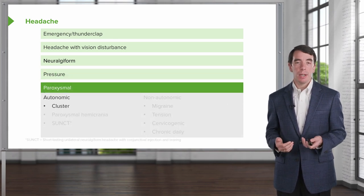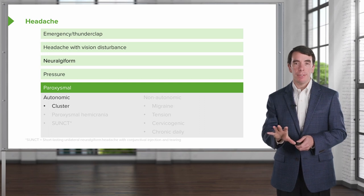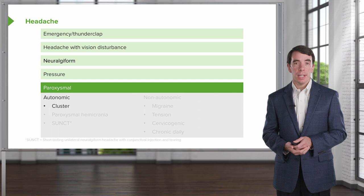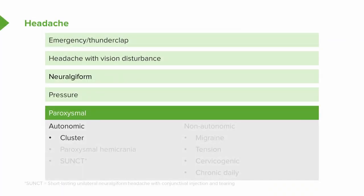That last category — paroxysmal headaches — we divide into those with prominent autonomic findings and those without. The autonomic paroxysmal headaches are the TACs, the trigeminal autonomic cephalalgias, and that includes cluster headache, paroxysmal hemicrania, and SUNCT — short-lasting, unilateral, neuralgia-form headache with conjunctival injection and tearing. The non-autonomic headaches include migraine, tension type, cervicogenic headache, and chronic daily headache. This is a useful categorization scheme to approach patients and clinical vignettes.